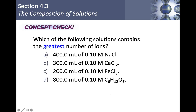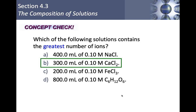Concept check: which of the following solutions contains the greatest number of ions? (A) 400 mL of 0.1 M NaCl, (B) 300 mL of 0.1 M CaCl₂, (C) 200 mL of 0.1 M FeCl₃, (D) 800 mL of 0.1 M sucrose. Take a guess — the answer is B, 300 mL of 0.1 M calcium chloride.